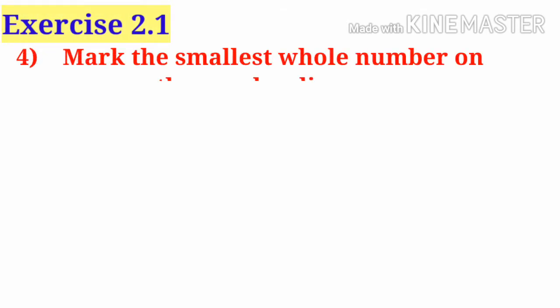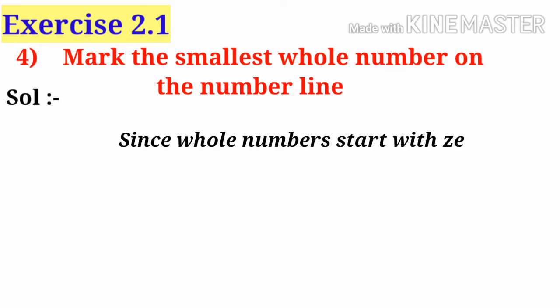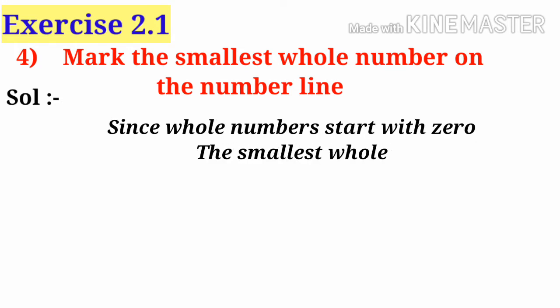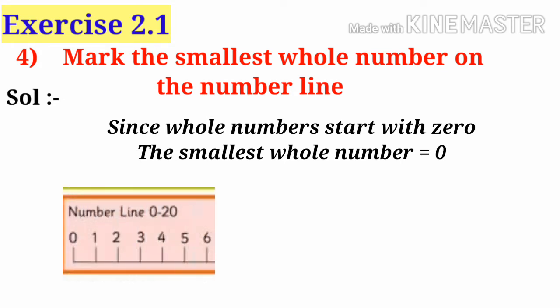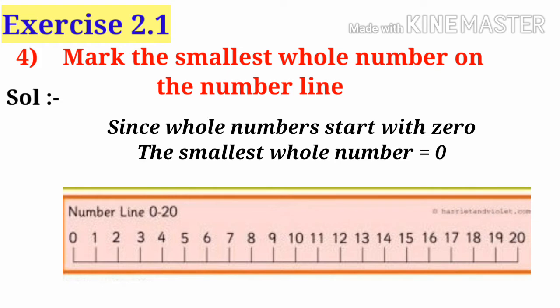Mark the smallest whole number on the number line. Solution: since whole numbers start with 0, the smallest whole number is equal to 0. Now draw the number line from 0 to 20, smallest whole number mark tick mark.